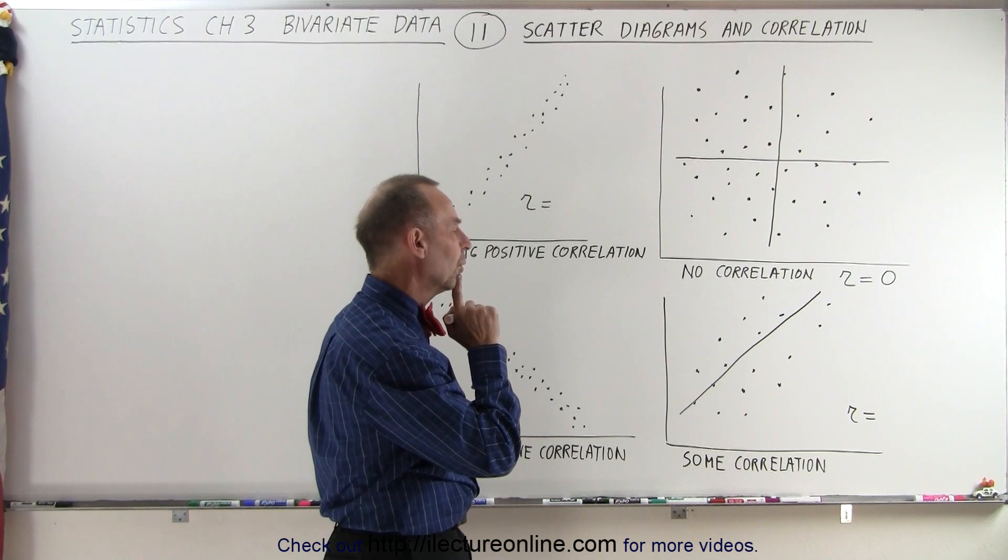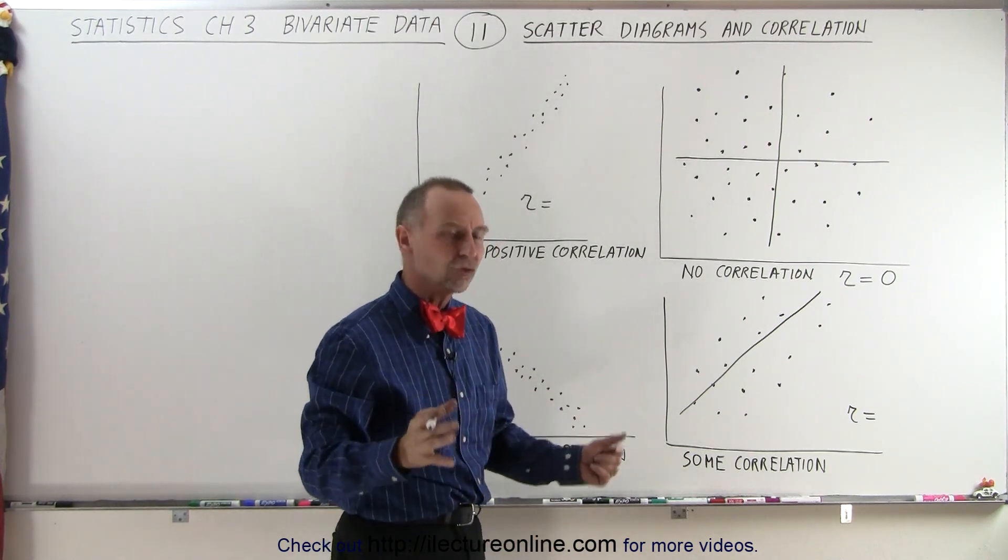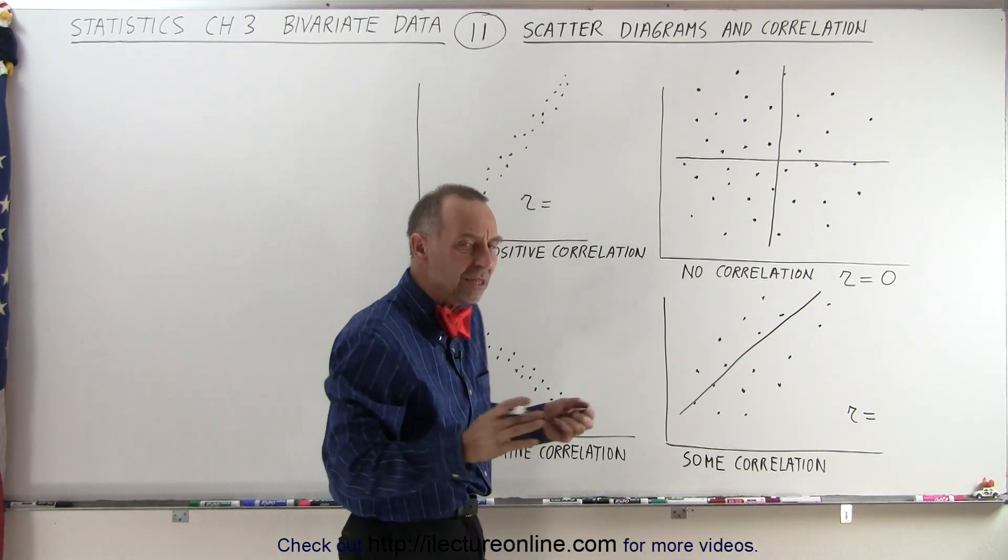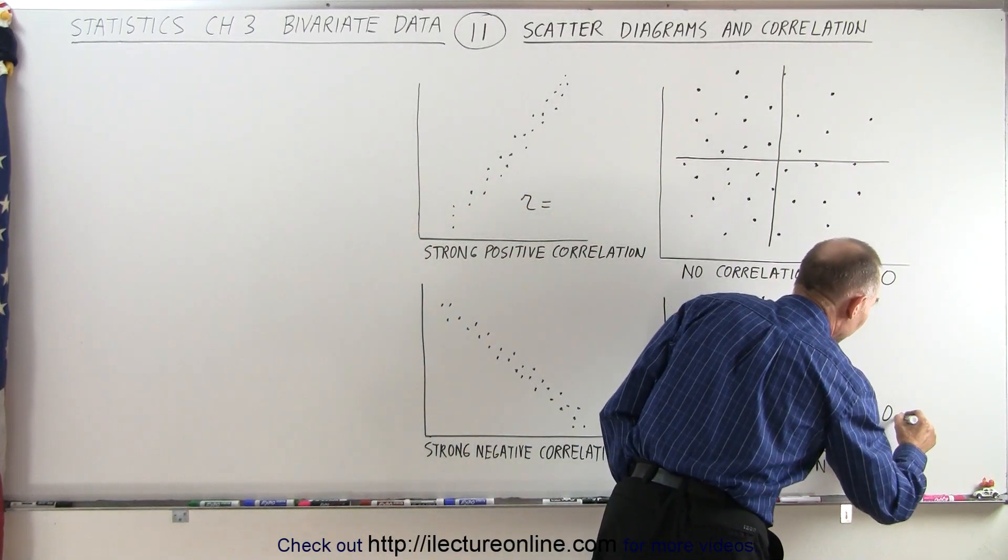So we can see here that there's some correlation, maybe not really strong, but some correlation between the horizontal and vertical data set, so maybe you could say that r is about 0.5.